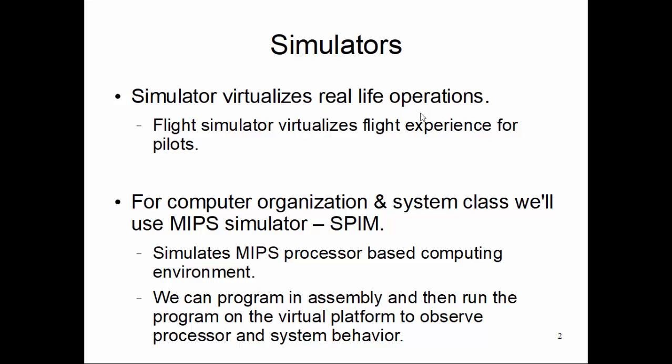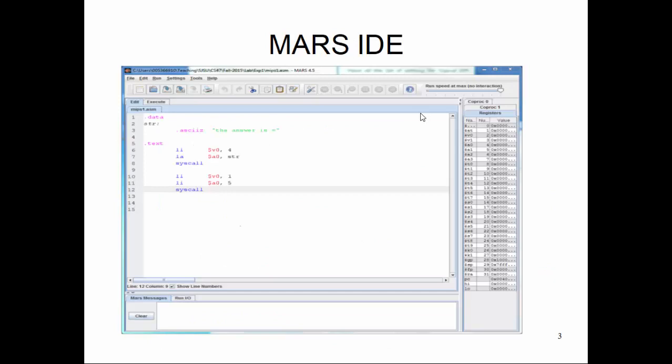On top of this simulator, we will be using an IDE called MARS, which is from Missouri State University. Please download it on your system — it is a Java-based application, so you need to download the JRE, the Java package, and so forth. It's very easy to invoke. It gives you an integrated development environment feel where you can type in your program, assemble it, execute it, and look at different component values like register values and memory values inside the processing system. That's your MARS IDE, and it looks like this.